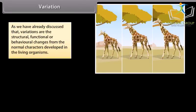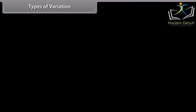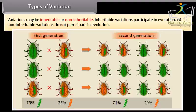Variations are the structural, functional or behavioral changes from the normal characters developed in the living organisms. Origin and accumulation of variations are essential because these provide raw material for evolution. Variations may be inheritable or non-inheritable. Inheritable variations participate in evolution while non-inheritable variations do not participate in evolution.